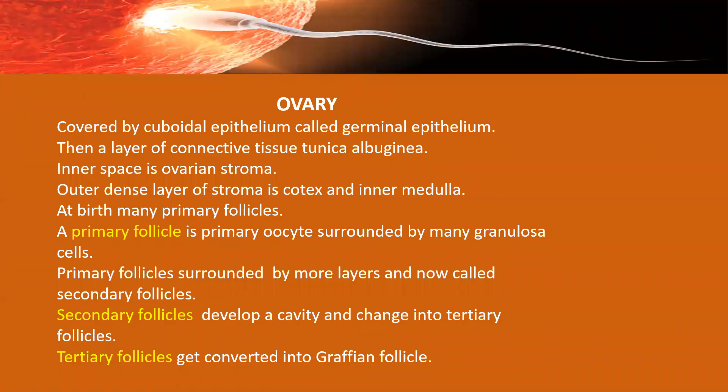Let us study the structure of ovaries in detail. The ovary is lined by a cuboidal epithelium known as germinal epithelium, because it keeps on dividing and forms follicles. Below the germinal epithelium, there is a connective tissue layer called tunica albuginea. The entire inner space of the ovary is called stroma, with the outer part called cortex and the inner part called medulla.